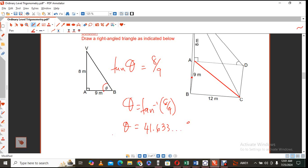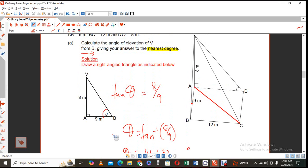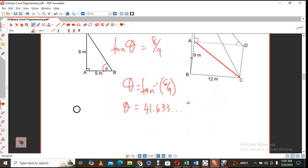But remember, we are looking for angle B, the angle of elevation of B from B. And that angle is nothing but, I'll just keep it as theta, is nothing but 42 degrees. And this is obviously to the nearest degree. Nearest degree should be whole number answer.